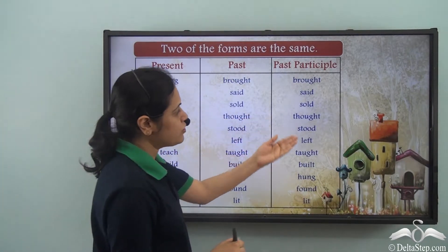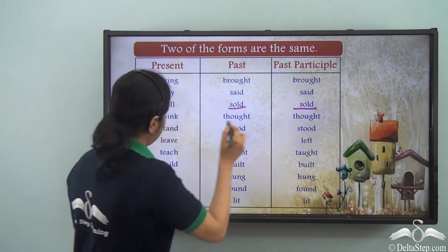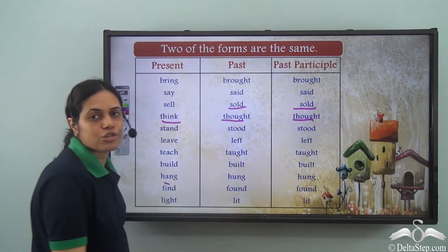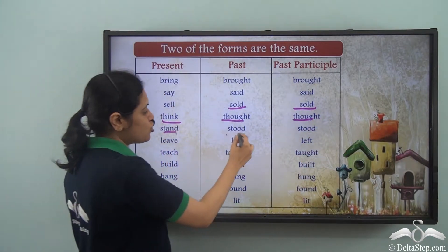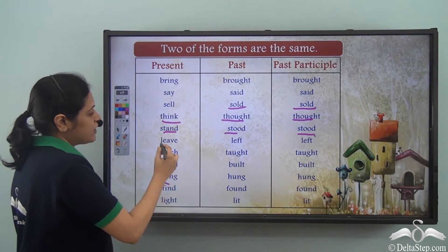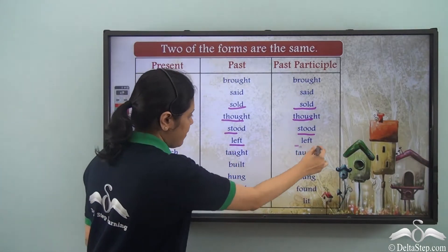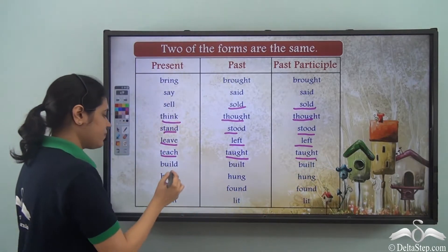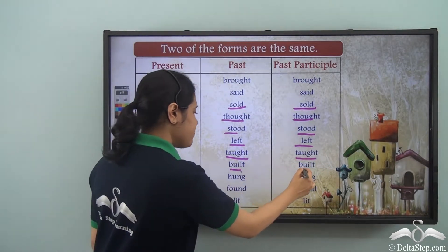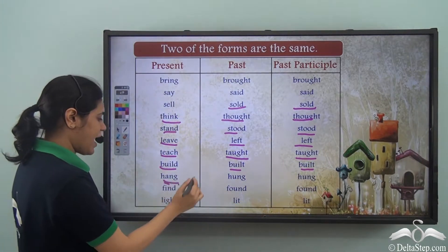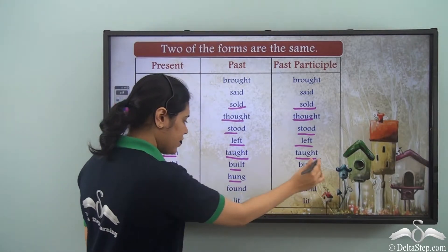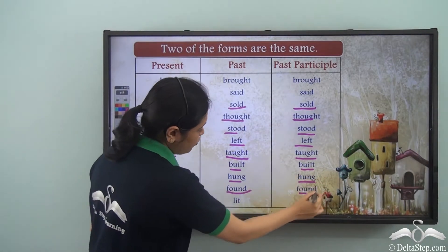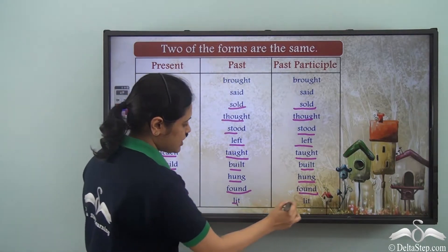There are many such verbs: sell — sold — sold; think — thought — thought; stand — stood — stood; leave — left — left; teach — taught — taught; build — built — built; hang — hung — hung; find — found — found; light — lit — lit.